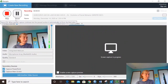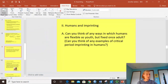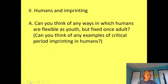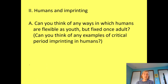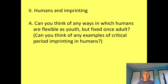In this video we're going to take a look at imprinting in humans. Can you think of any ways in which humans are flexible as young people but fixed once we become adults? In other words, can you think of examples of a critical period of imprinting in humans? This is kind of tricky.